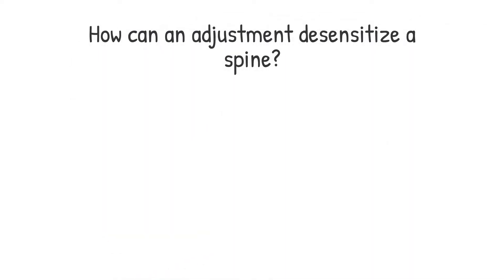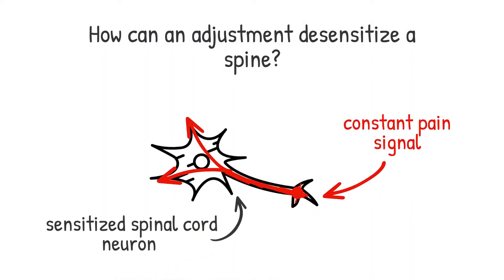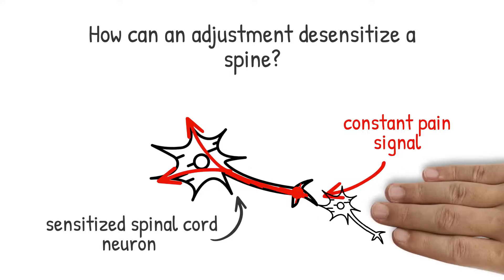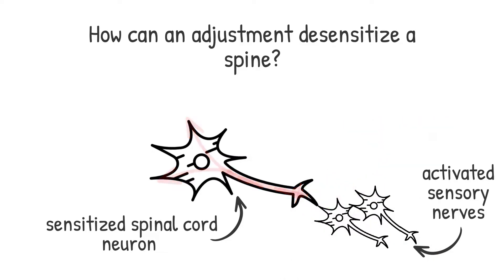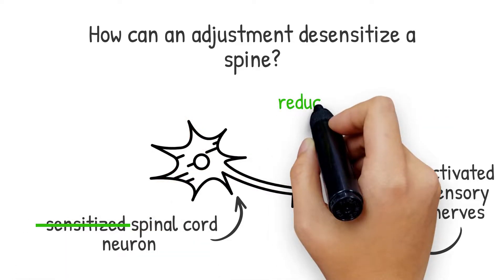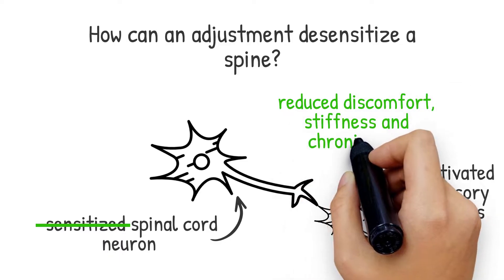How does this happen? When a chiropractor delivers a spinal adjustment, specialized sensory nerves in the manipulated joint and muscles are activated, which then block pain signals from pain fibers. Collectively, these effects contribute to reducing discomfort, stiffness, and chronic pain in the body.